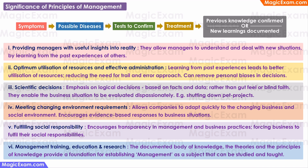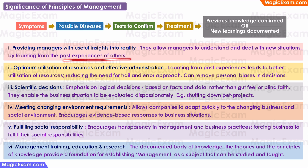These principles help in the optimum utilization of resources and in effective administration through better utilization of resources, time and money. They can also reduce personal biases from decisions, because the manager is learning from the collective past experiences of others who have dealt with similar situations in the past. So even if the manager wants to react in a particular way, which might be the wrong way, the principles can guide him to act in a different way, which is the correct way. Because the principles of management are based on past experiences, facts and data, they are more scientific as compared to a gut feel or a blind faith. Therefore, the principles of management will allow businesses to take scientific decisions.